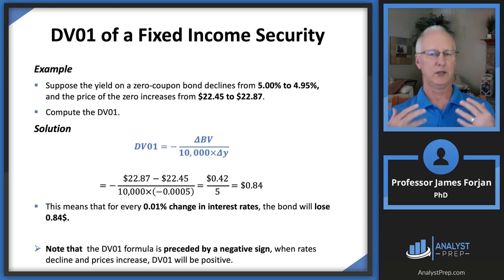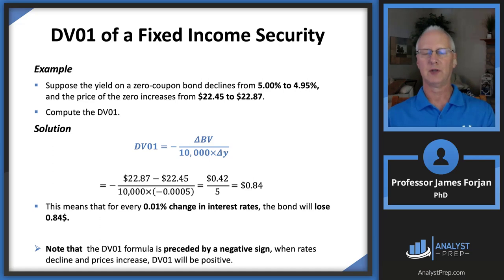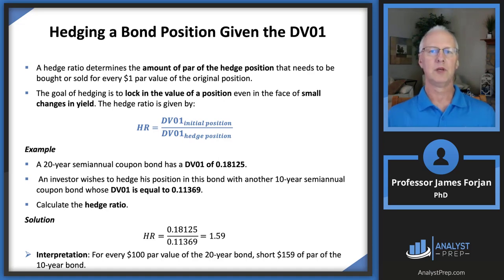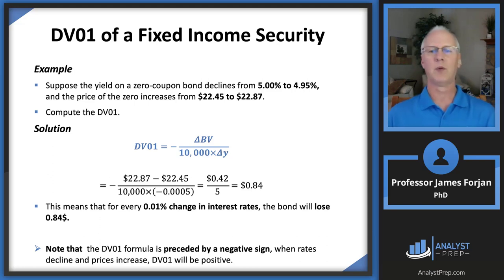Bondholders and fixed income security holders use DV01 to assess what's at risk in terms of portfolio value for very small changes in interest rates. There's a negative sign to reflect the downward slope. The question becomes: if the DV01 is high enough — for another bond it might be $1.84, $2.84, or $300 — how do we manage this risk? One way is to hedge.